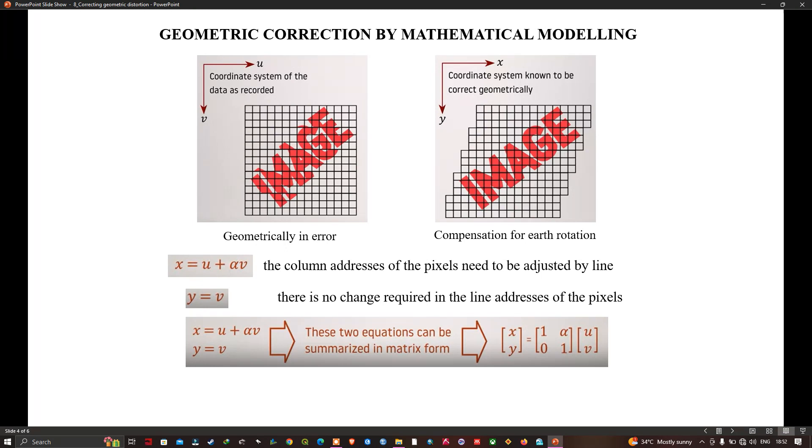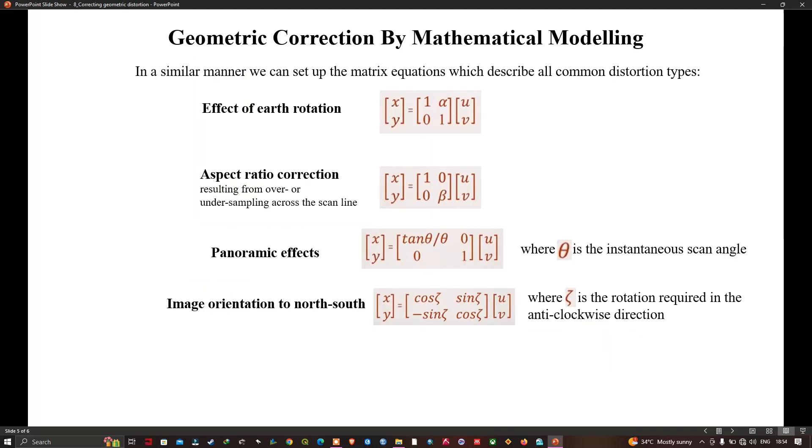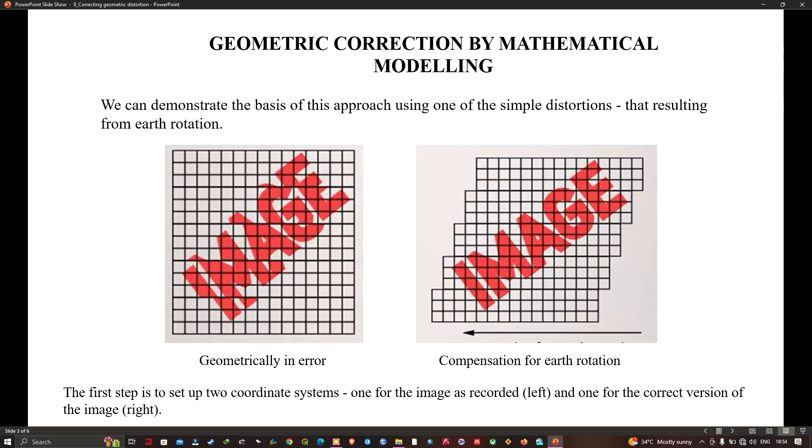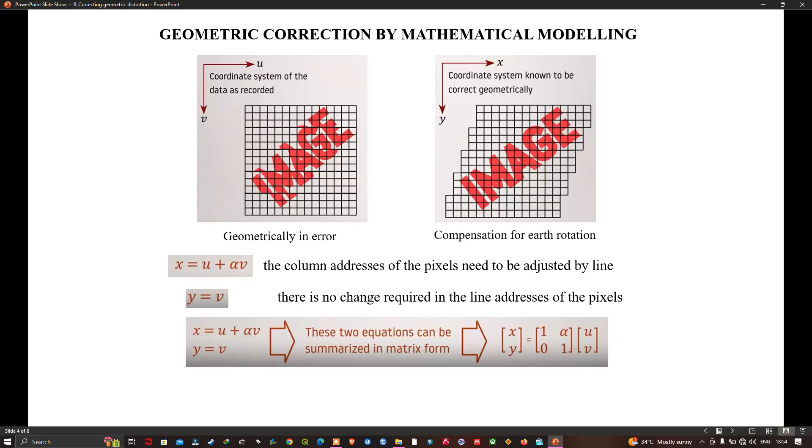For example, with respect to a chosen map grid. Clearly, what we have to do now is form a mathematical relationship between the pairs of coordinates. We now set up two equations that describe the position of a pixel in the correct coordinate system as a function of the position of the pixel as recorded.